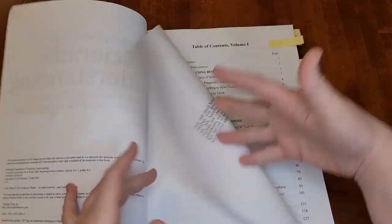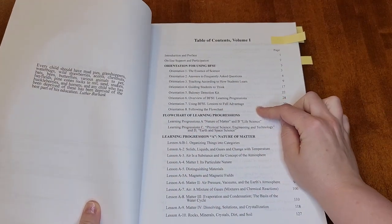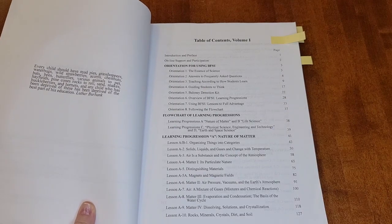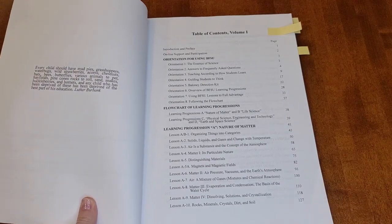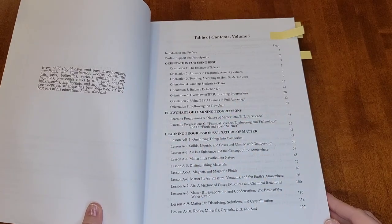So let's take a look at the Table of Contents. The first part is all about how you teach this program, all that information you'll need to read before you start. It's a lot to take in, so I recommend setting aside a couple of different times to read all of that. You can see it's eight orientations.